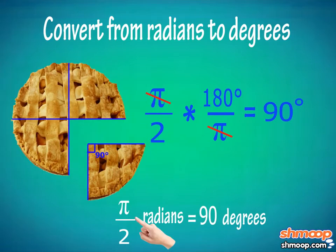Each slice of pie is π over 2 radians, or 90 degrees. Tommy feels quite satisfied, both by the dessert and his formidable algebra skills.